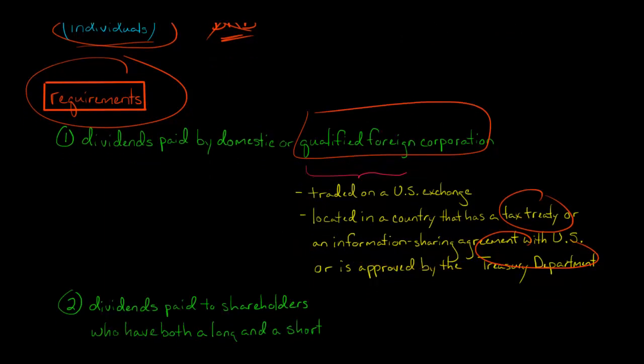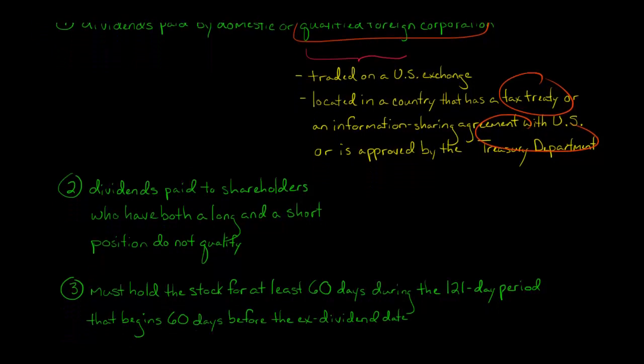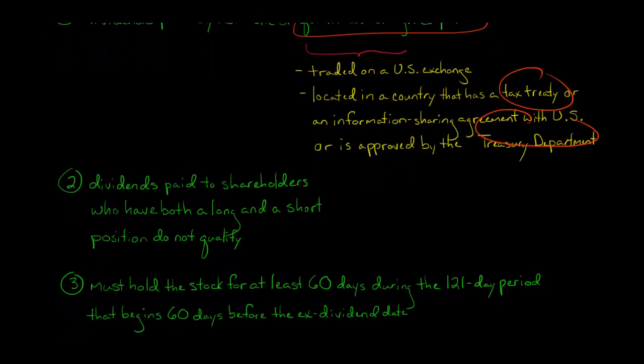If you're the shareholder and you have both a long and a short position in that stock, and then you receive dividends from your long position, the dividends will not be qualified dividends. You're not going to get the lower tax rate. So basically, if you are selling a stock short, any dividends you receive on a long position are just going to be taxed as ordinary income. You're not going to get the benefit of qualified dividends.